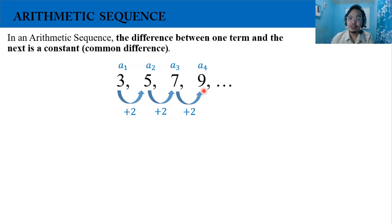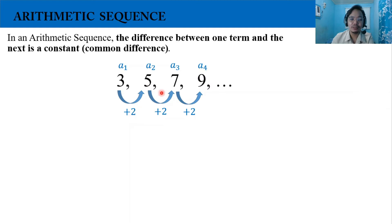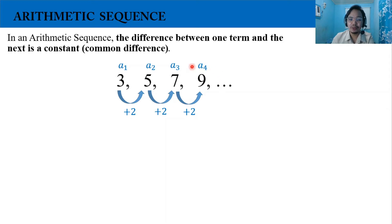On the other side, if we're going to subtract a term from the previous term — let's say 5 is a term and the previous term is 3 — 5 minus 3 is 2. 7 minus 5 is also 2. 9 minus 7 is also 2. So this is the common difference. The common difference for this sequence is equal to 2.